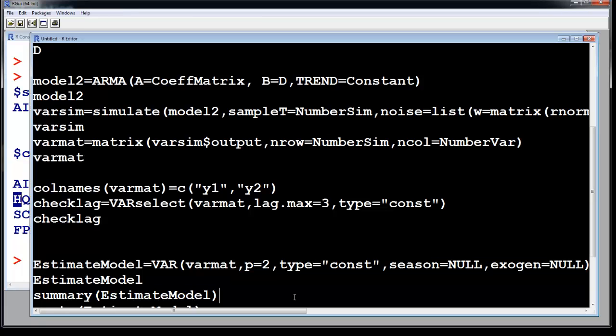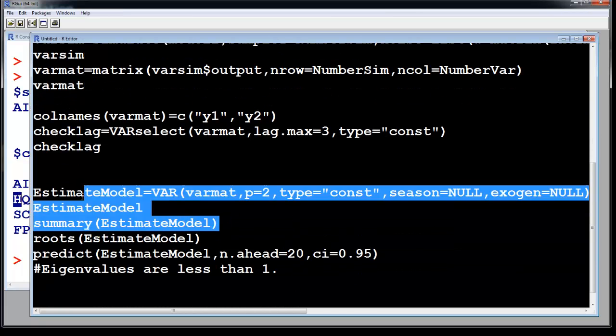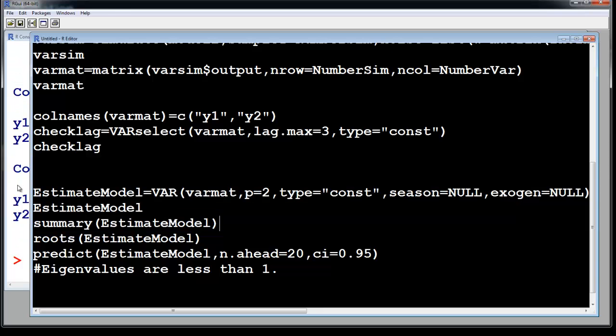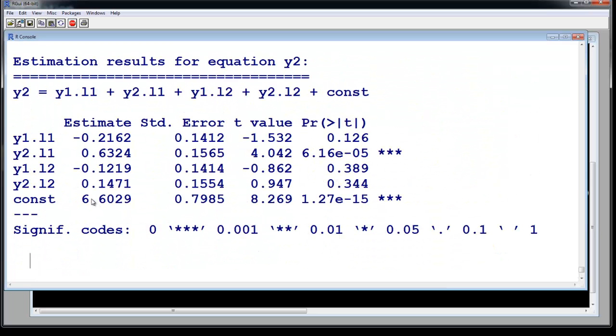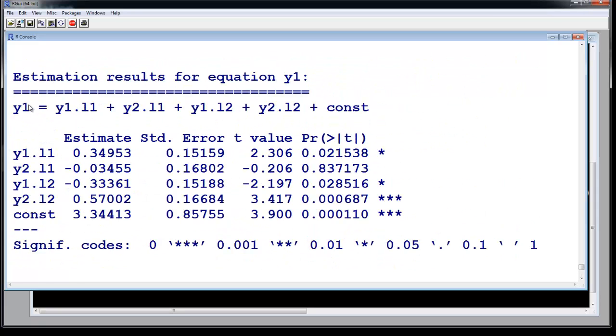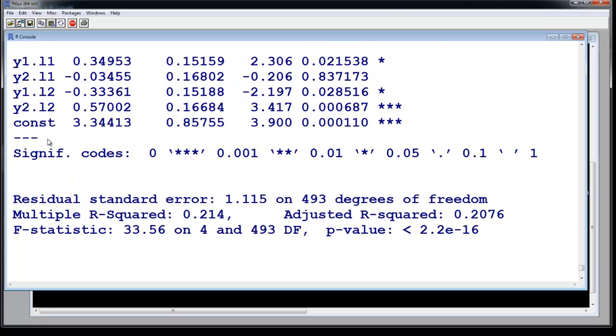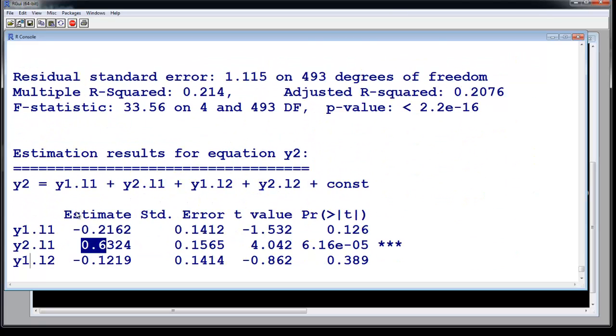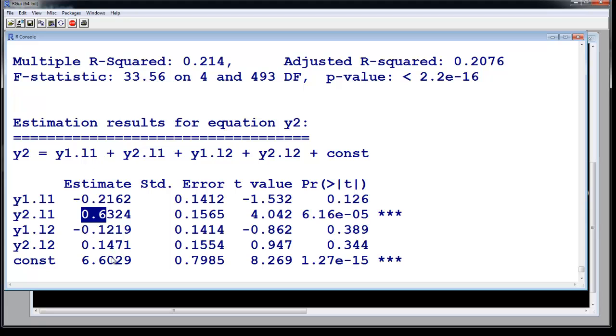Then you just estimate the model again. Again you will get values. Again the constant was coming to be 7, it is now coming 6.6. We fed in 0.1 for our original lag for y2, this is coming 0.14. Similarly we fed in 0.6, this is coming to be 0.63. So this y1 is xt and this is yt.